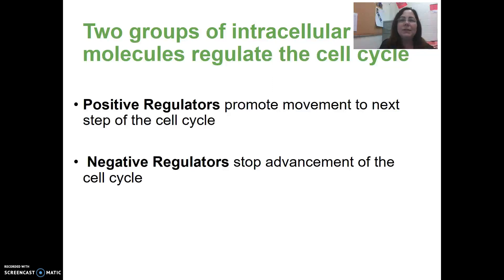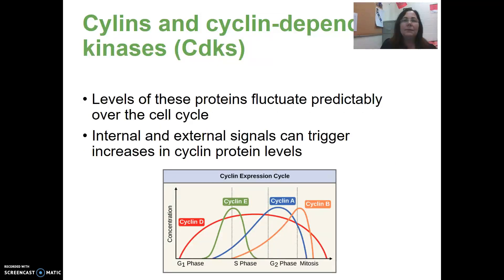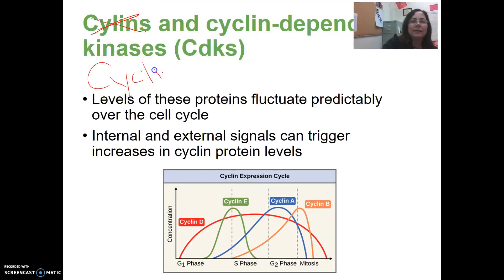There are two groups of intracellular molecules that regulate the cell cycle. Positive regulators promote the cell cycle and cause it to continue to the next stage. Negative regulators will stop the cell cycle from moving on. Cyclins and CDKs — cyclin-dependent kinases — are proteins whose levels fluctuate in a predictable way throughout the cell cycle, and different signals can trigger increases in cyclin protein levels.